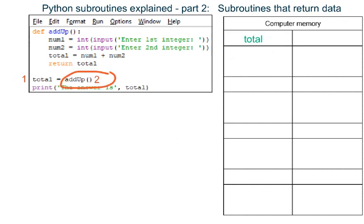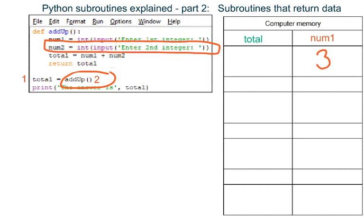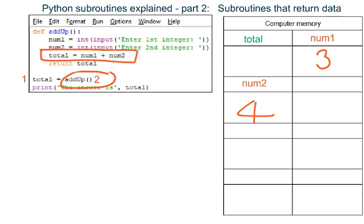Two: the subroutine AddUp is called, Python jumps back up the program and runs the code inside subroutine AddUp. It makes a variable named num1 and an integer is stored in it. It makes a variable named num2 and an integer is stored in it. It makes a variable named total, and the result of adding up what is in num1 and num2 is stored in this new variable called total.